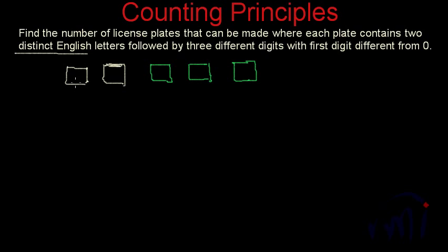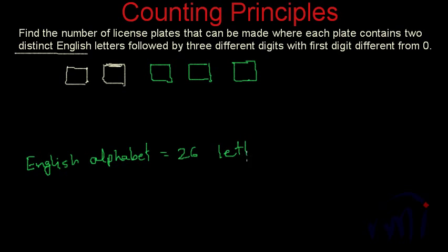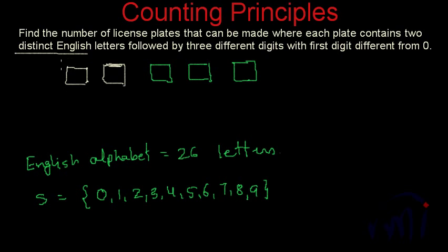How many letters do we have in the English alphabet? We have a total of 26 letters. Since these two places are supposed to be filled with letters, for the first place we will have 26 different choices. For the second place we will have only 25 choices, because the letter which has already appeared at the first place cannot appear again — we cannot repeat the letter already placed.